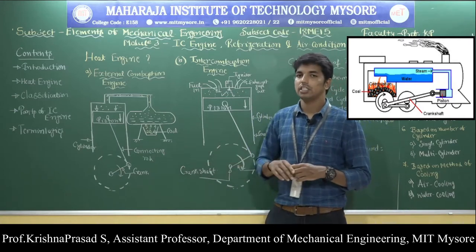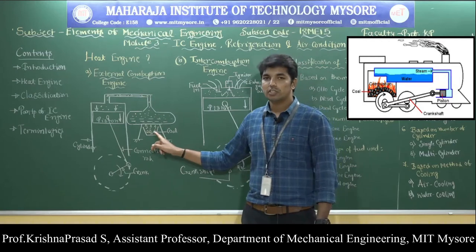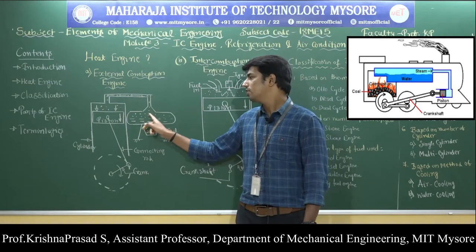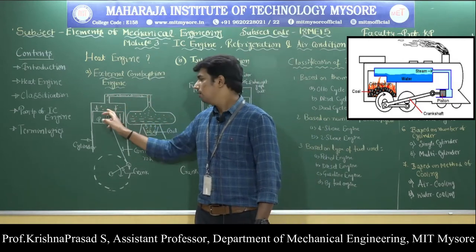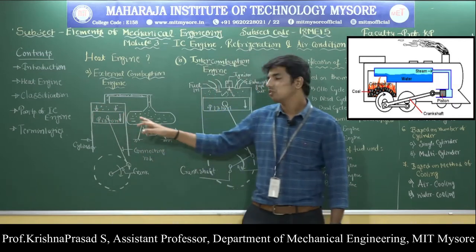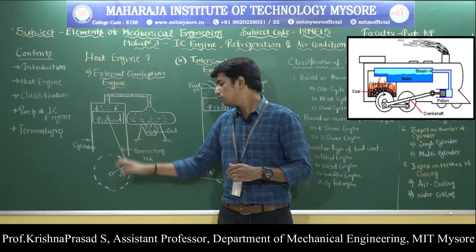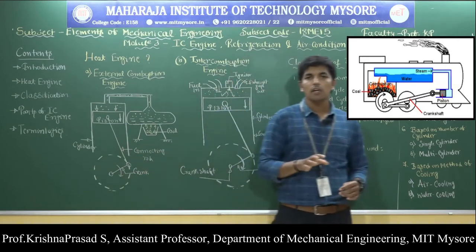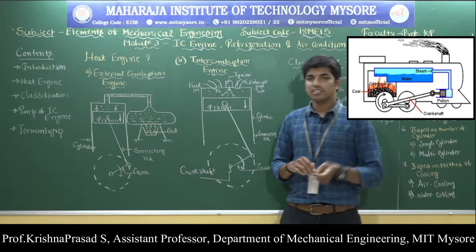In the external combustion engine, combustion of the fuel takes place outside the engine cylinder, and coal is used as fuel. Whenever coal is burnt, the heat energy produced is used to convert water into steam. The steam produced has a high amount of energy, which enters inside the engine cylinder. These burnt gases expand and exert a large force on the piston. The piston reciprocates inside the engine cylinder and motion is transferred to the crankshaft through the connecting rod and crank. One example of the external combustion engine is the steam engine.